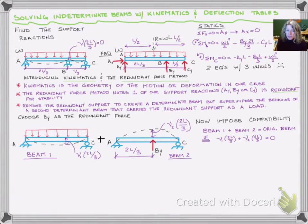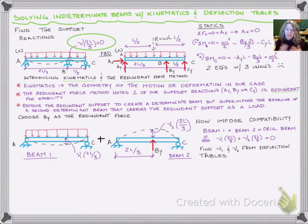Of course, our original beam we've already established has zero displacement at 2L over 3. How are we going to do this? We could integrate, or since we have the deflection tables, let's just get our displacements from there.